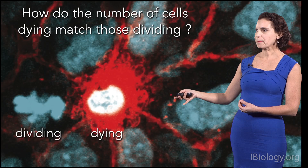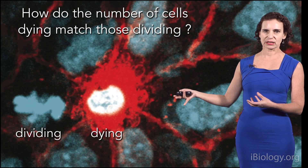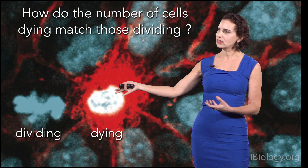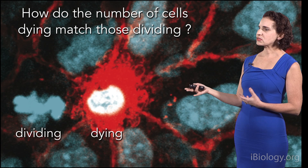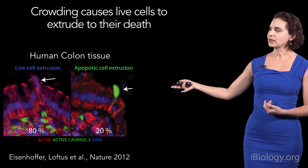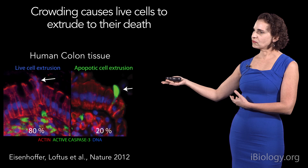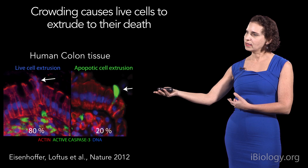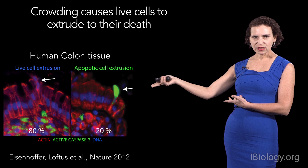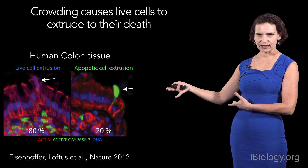We next wanted to understand how cells naturally undergo cell death in an epithelium and how this matches the number of cells dividing to maintain constant cell numbers. We looked at lots of different types of epithelia — shown here is the human colon tissue epithelium — and every type gave the same results. Staining for apoptotic cells using an active caspase-3 marker, we see that places where cells are dying are also extruding, which was not surprising.